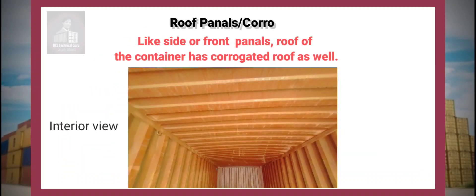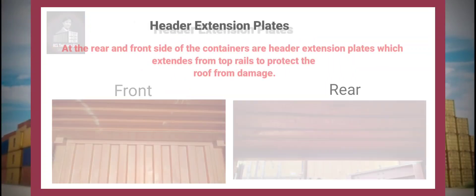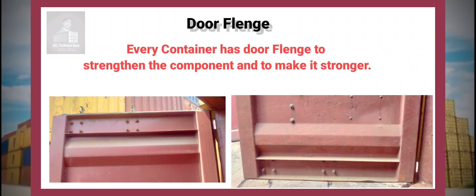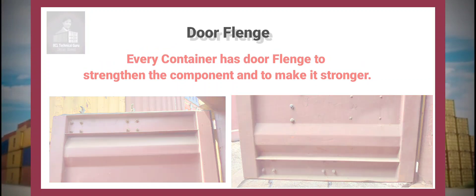Roof panels: Like the side or front panels, the roof of the container has corrugated roof panels as well. Header extension plates are located at the rear and front sides of the container — they extend from the top rails to protect the roof from damage. Door finch: Every container has a door finch to strengthen the component and make it stronger.